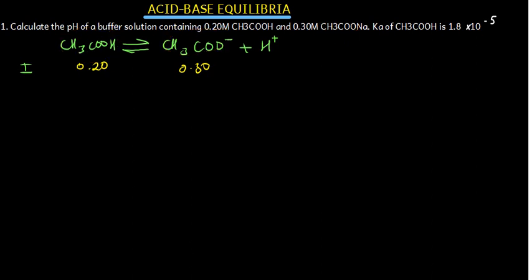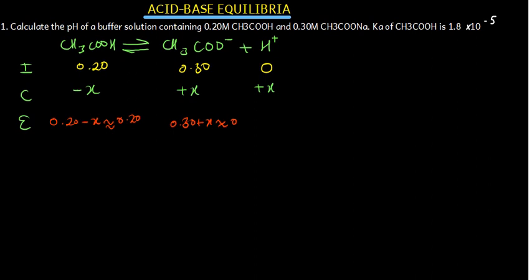Initially: [CH3COOH] = 0.20, [CH3COO⁻] = 0.30, [H⁺] = 0. After change of −x for the acid, +x for each product: at equilibrium, [CH3COOH] ≈ 0.20 (since Ka is very small, x is negligible), [CH3COO⁻] ≈ 0.30, and [H⁺] = x.